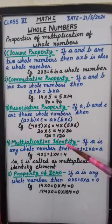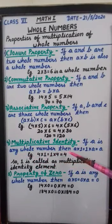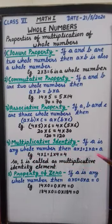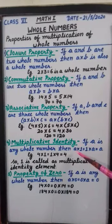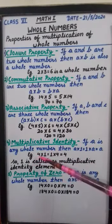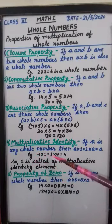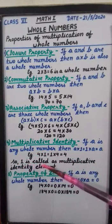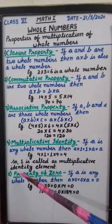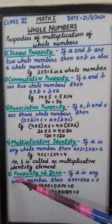Fourth one: Multiplicative identity. If A is any whole number then A multiply by one is equal to one multiply by A, which equals A. That means whenever we multiply a whole number with one, the result is the whole number itself. For example, four multiply by one is same as one multiply by four — the answer is four. So one is called the multiplicative identity element.